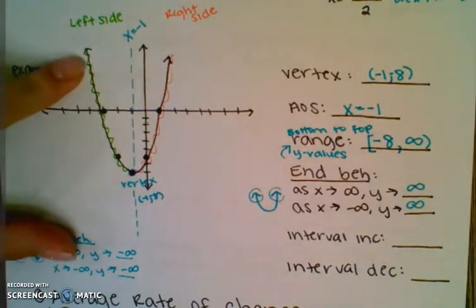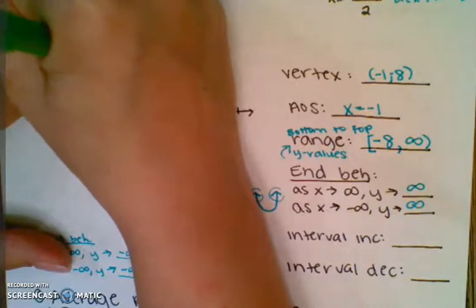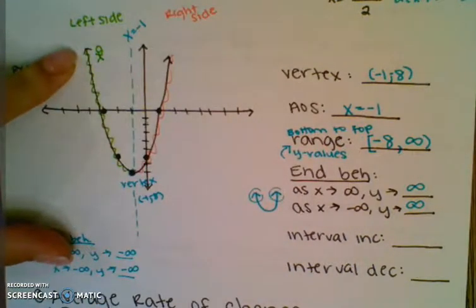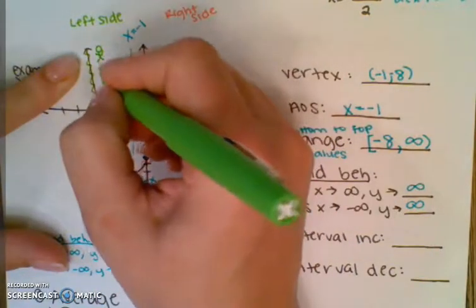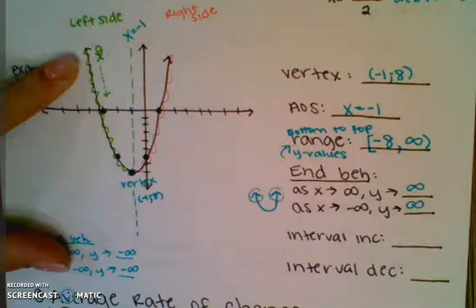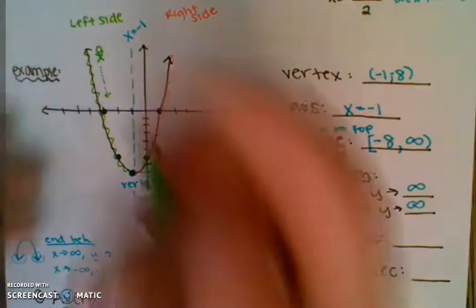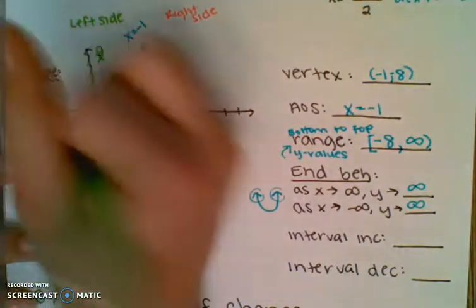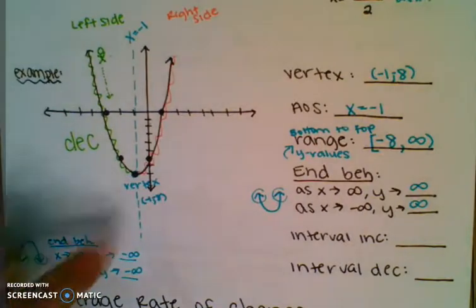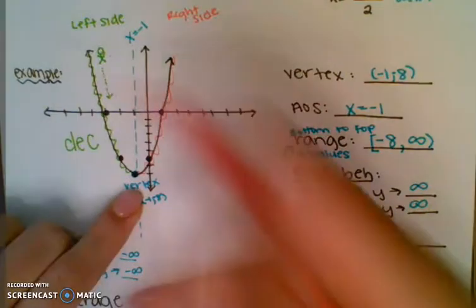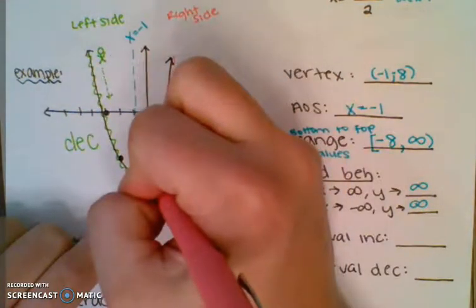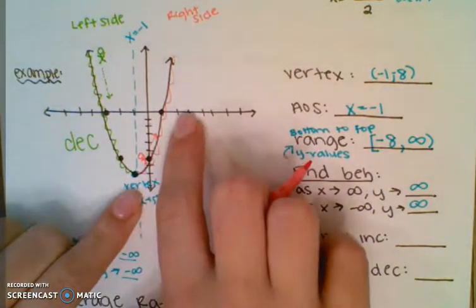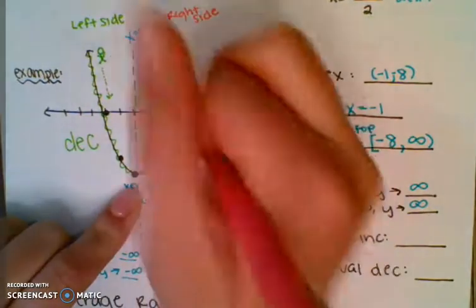On the left side, if I was a person on a roller coaster, I can only walk to the right. When I'm walking to the right on this left side of the graph, I'd be going downhill. So this left side is the decrease. I get all the way down to the bottom — the vertex — and now walking again to the right, I'd be walking uphill. So this side is increase.